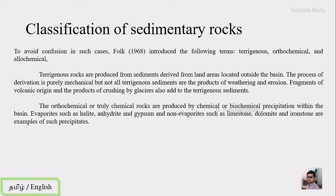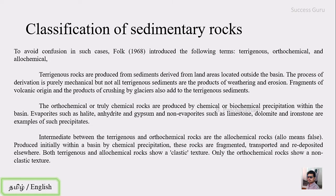The second category, orthochemical or truly chemical rocks, are produced by chemical or biochemical precipitation within the basin — due to changes in pressure and temperature or biological activity. Examples include evaporites such as halides, anhydrite, and gypsum, and non-evaporites such as limestone, dolomite, and ironstone. The intermediate category, allochemical rocks — 'allo' meaning false — is initially precipitated within the basin but then fragmented, transported, and redeposited elsewhere. Both pterogenous and allochemical rocks show clastic texture; only orthochemical rocks show non-clastic texture.